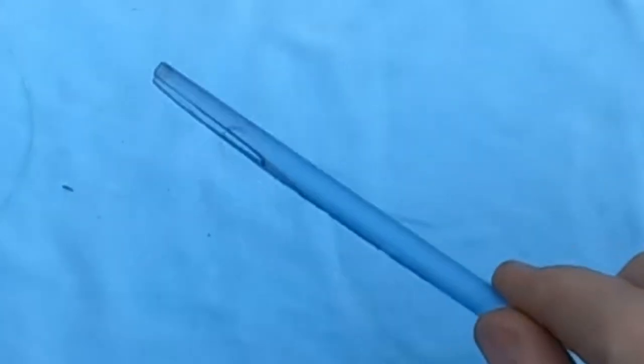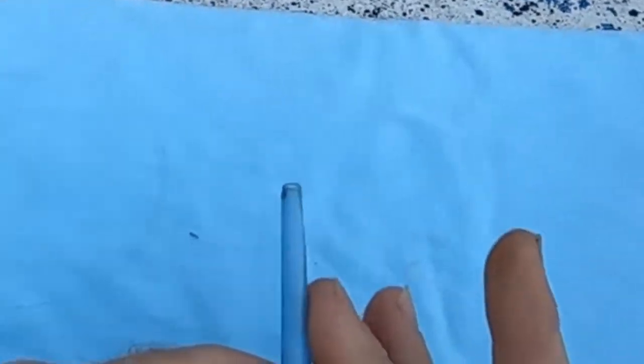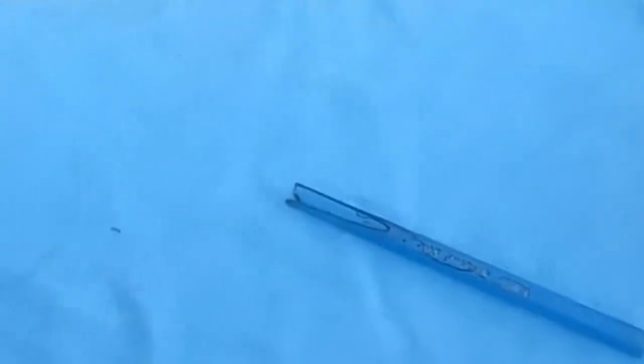All right guys, what I use is a simple ink pen tube, nothing special about it. Get it on the belt sander, grind it down a little bit of an angle, cut you a little V-notch in it. Quick, easy, simple. You can use it for years.